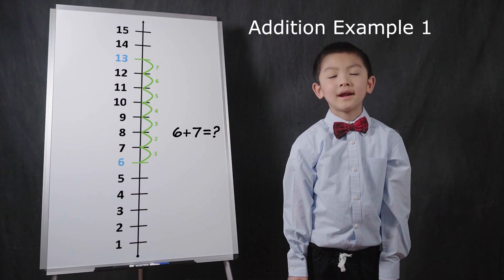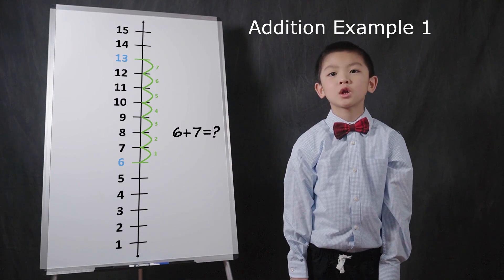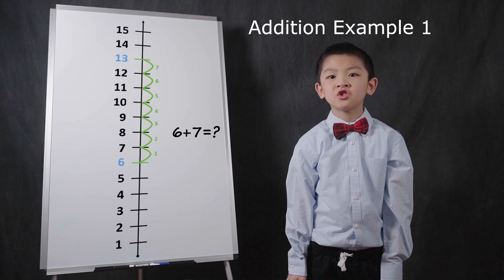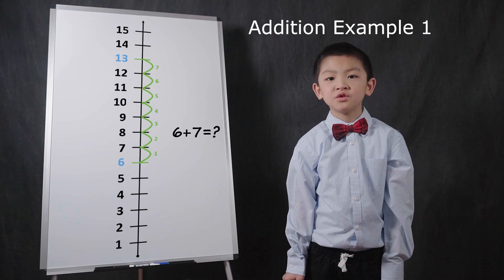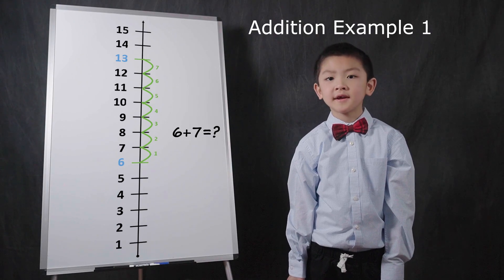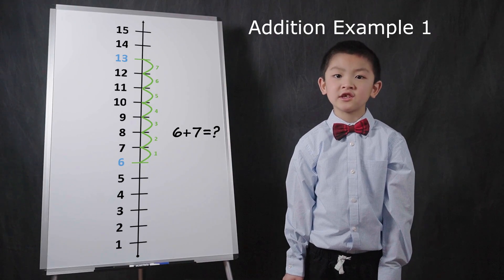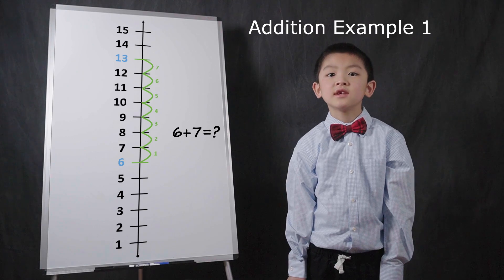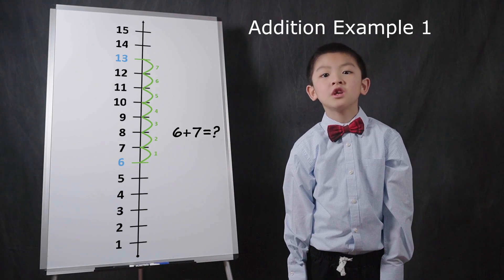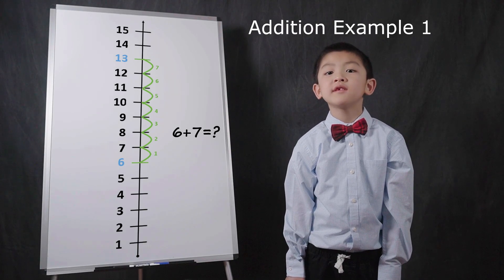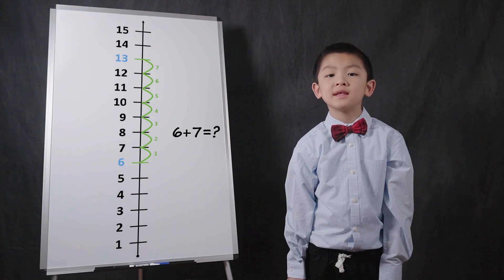When adding with tally marks, we count tally marks. When adding using the number line, we are also counting things. In a sense, we are counting units of space, or the distance between numbers.